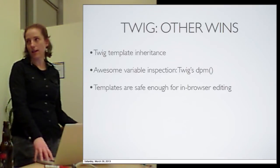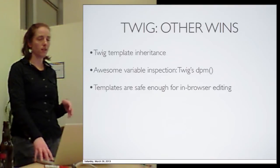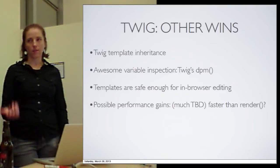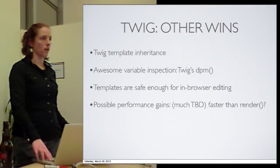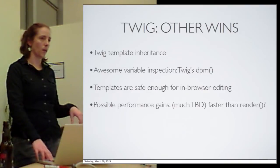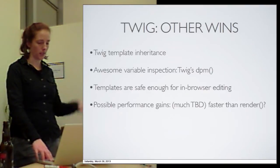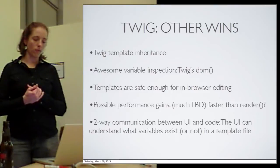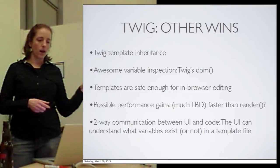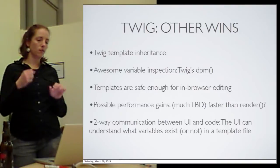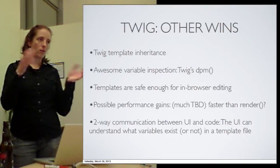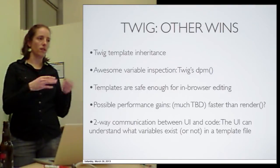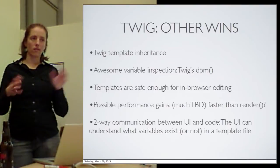Templates are now safer for browser editing — if we want something like Contemplate, these template files are safe. We have possible performance gains, though we still need to test it. But because Twig compiles templates, it's potentially faster than carrying around giant renderables for the entire page.